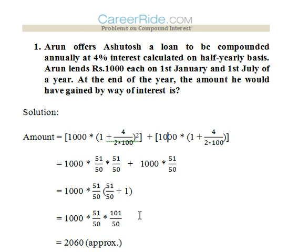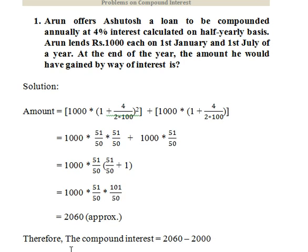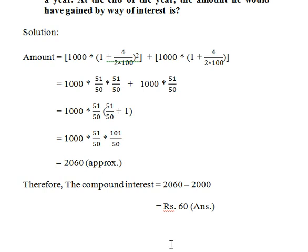Solving this: 1000 × (51/50) × (51/50) + 1000 × (51/50). At last, we get 2060. The compound interest would be 2060 minus 2000 — Rs. 1000 given at the start of the year and then at the middle of the year, so total principal is 2000. Subtracting from 2060, we get 60 as the answer.